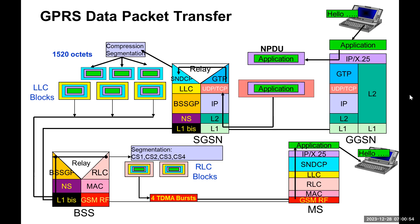First, the application layer generates the IP data and sends it across the external IP network to the GGSN. The IP datagrams arriving at the GGSN are known as NPDU — Network Packet Data Unit.